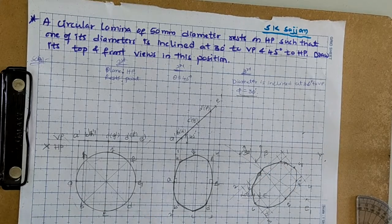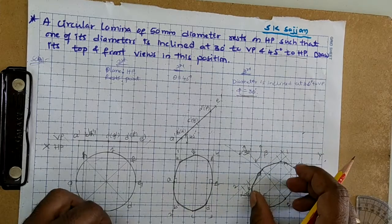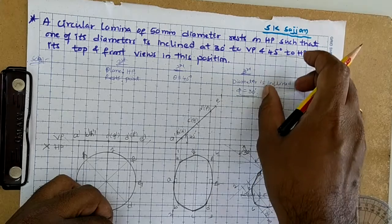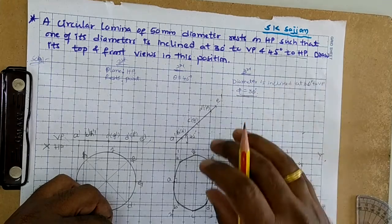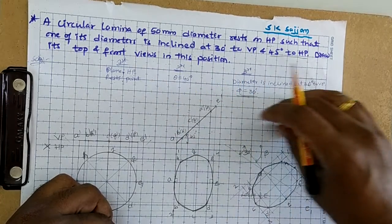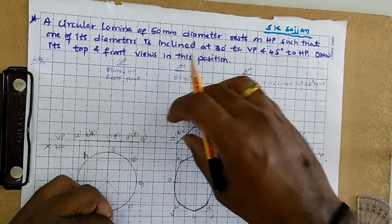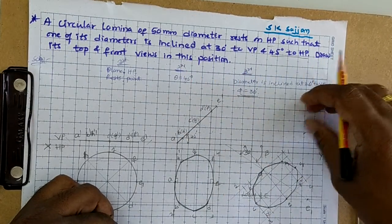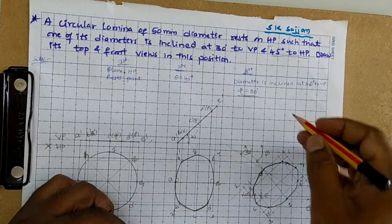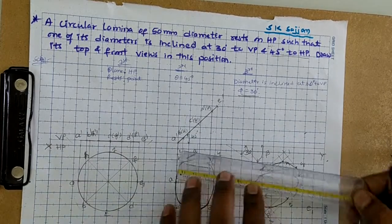Now for the front view: project all the points of this top view vertically upward, and draw all points of the previous front view horizontally. The vertical projectors and horizontal projectors intersect — mark those intersection points and join them to obtain the front view.